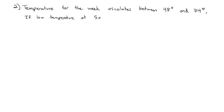We can model sunrise and sunsets. We can model temperature. Temperature for the week oscillates, that means swings back and forth, between 48 degrees and 74 degrees. If the low temperature occurs at 5 a.m., when is it 65 degrees?